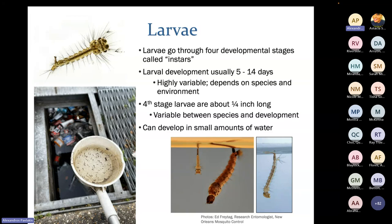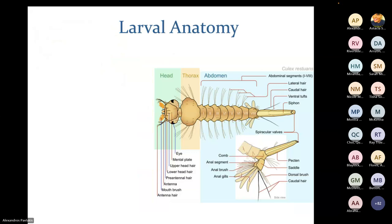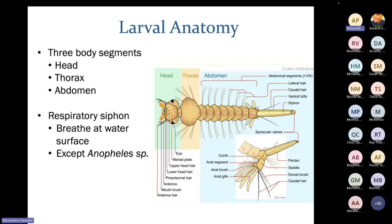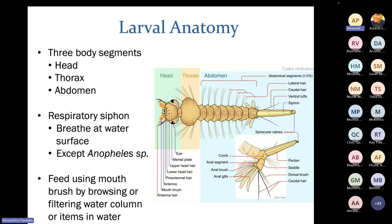Some species of mosquitoes really just need a small amount of water — there's a famous photo of a mosquito laying eggs in just a bottle cap of water. When discussing larval anatomy, they have three body segments: head, thorax, and abdomen. What's defining for many species is their siphon — a respiratory siphon at the back of their abdomen used to breathe while hanging at the water surface. All mosquito species have this siphon except Anopheles, which is an easy way to tell that genus apart.